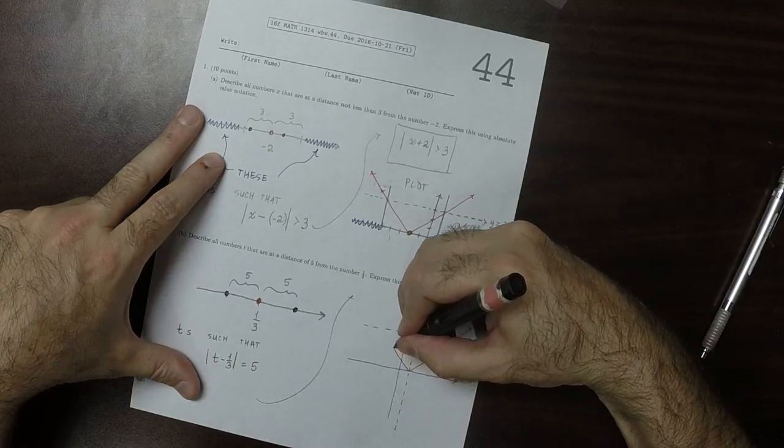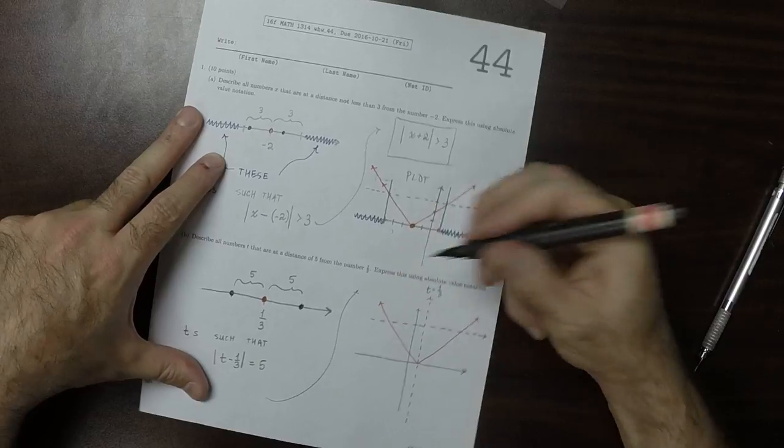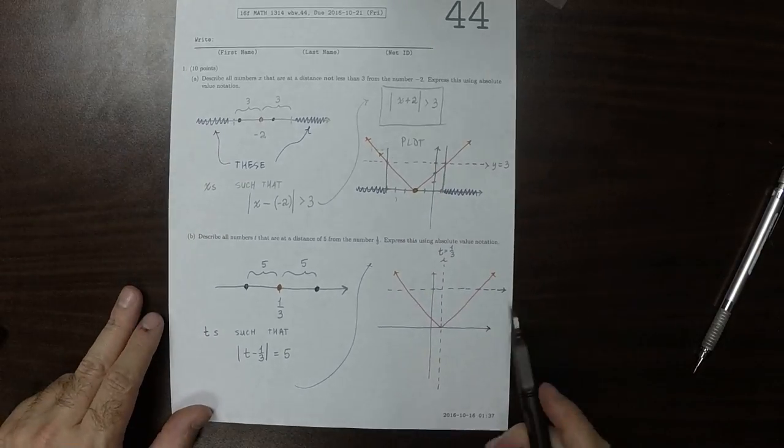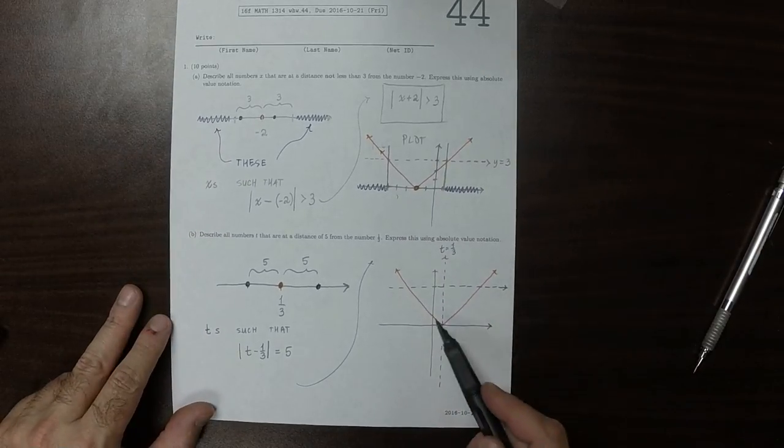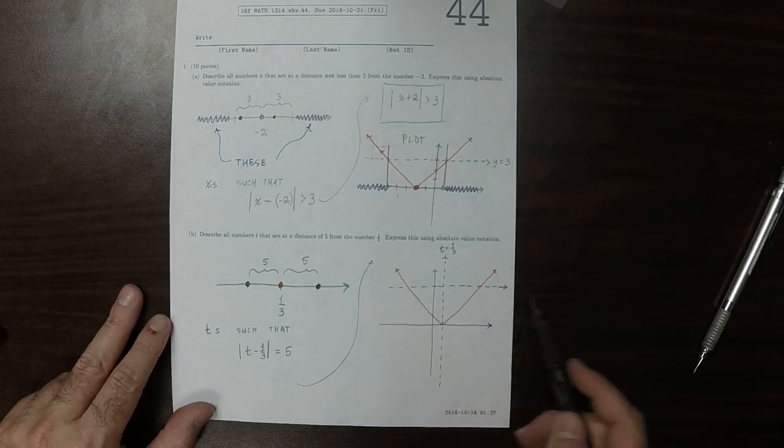And what we have is an absolute value with its point right there. And the question, visually, is equivalent to asking, please tell me everywhere that the red is touching the dashed line.